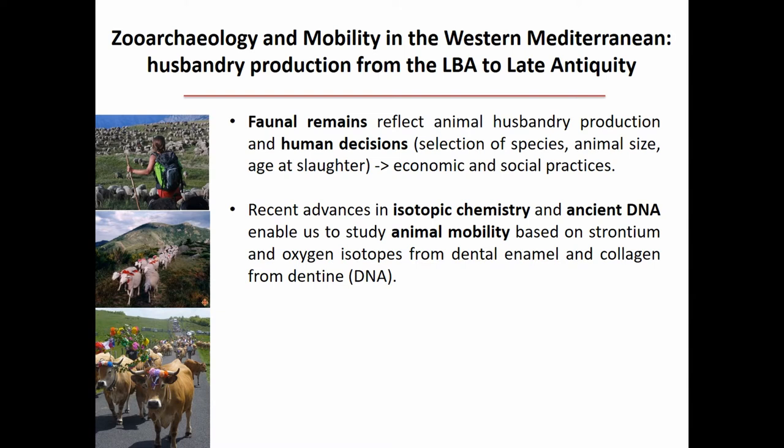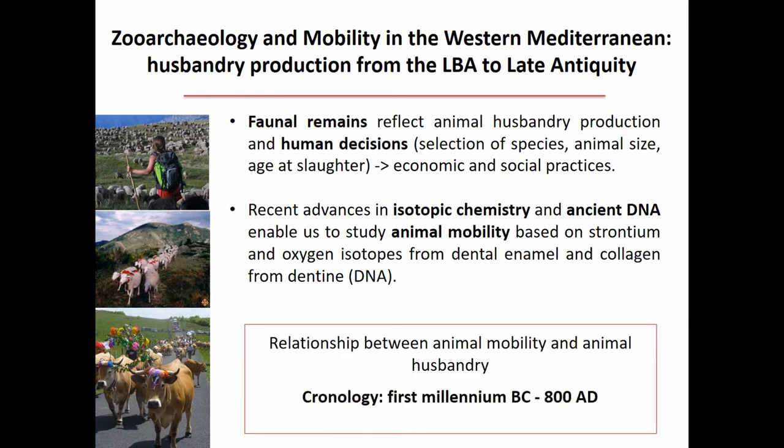Using isotopic analysis, we can explore animal mobility. This is what we are doing. What we want to know is the relationship between animal mobility and animal husbandry — how animal mobility changes animal husbandry. And we are taking this specific chronology, and we will see why.